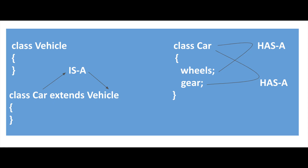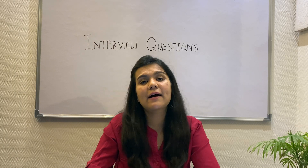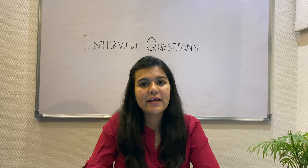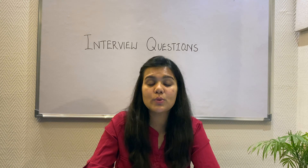So car will extend the vehicle class. For the has-a relationship, a car has wheels and gears. The relationship between the car and the wheel is a has-a relationship — a car has wheels, a car has gears, and similarly car will have other properties. I will be explaining aggregation and composition later in this video, so please keep watching.